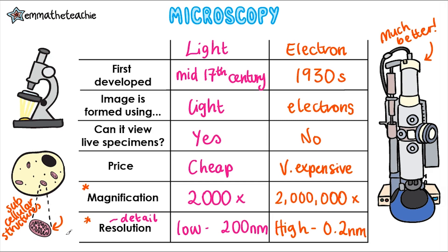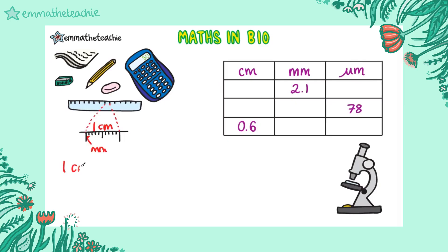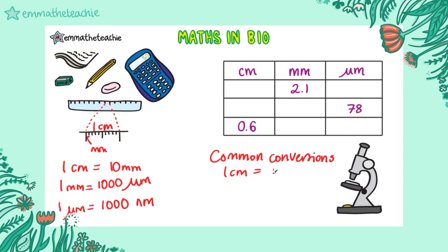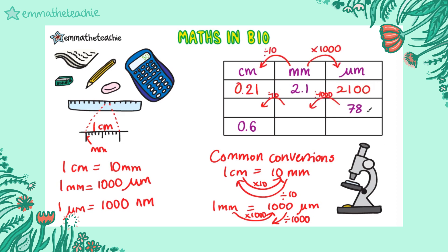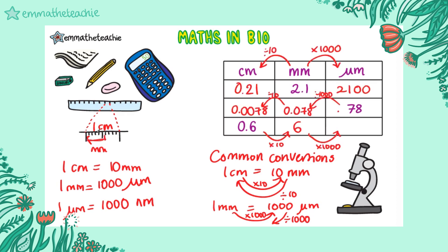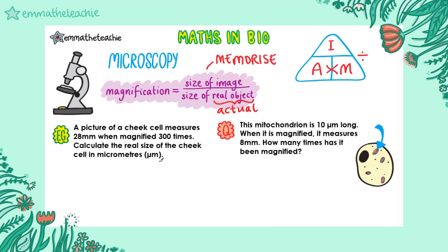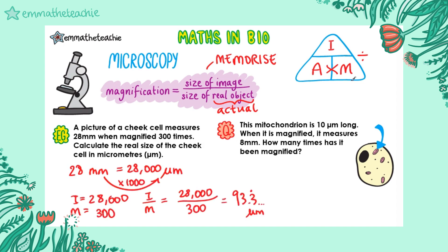We'll look at these in more detail in the next video. I'm now going to direct you to my maths and biology video, so you can learn about the magnification equation for light microscopes. You'll also look at how to convert between different units. I normally finish my videos with quick questions, but you'll be given some microscopy questions to try in the maths video, so I won't include these here today.